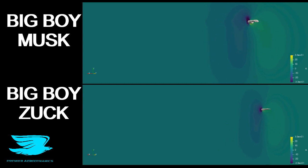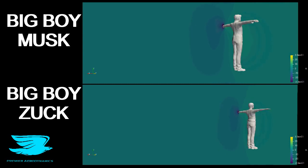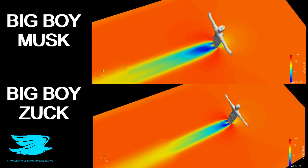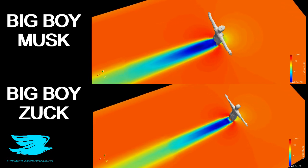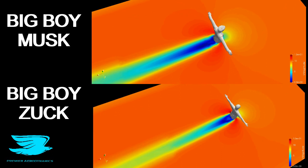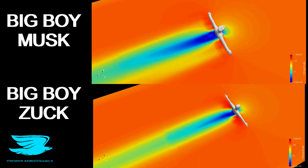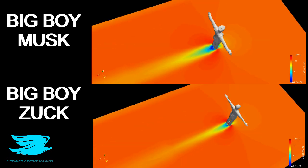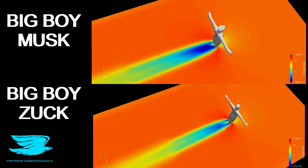Looking at these Z-planes going from their feet upwards, when we hit the midway section—like their waist—you can really see the difference in the wakes. Musk has a much bigger wake; it extends far more downstream. It's far worse than Zuck's. This is partly because of their midsection, their torso, but also what they're wearing.